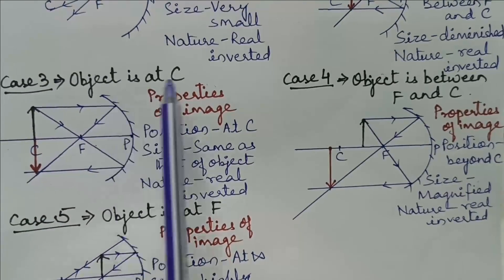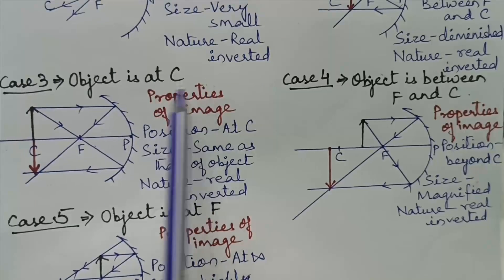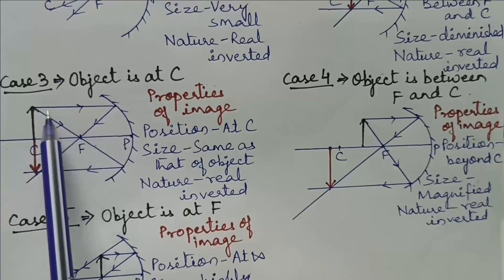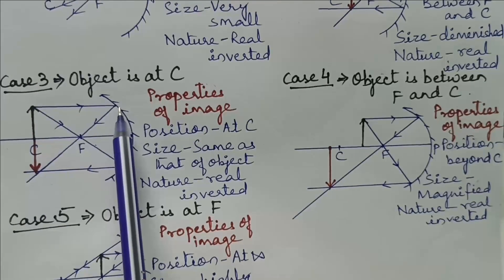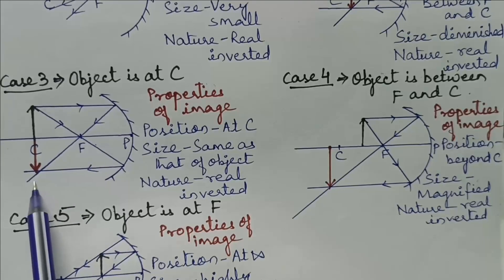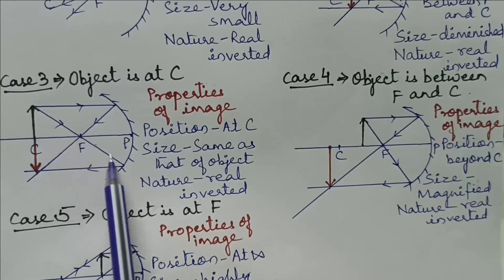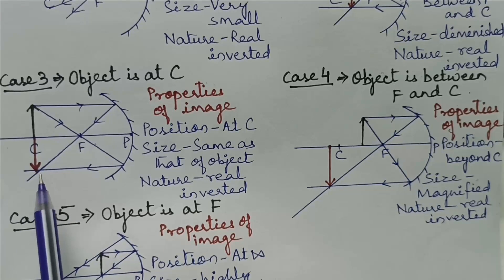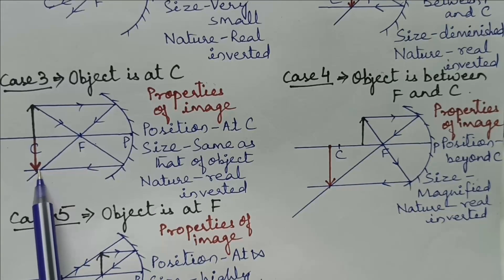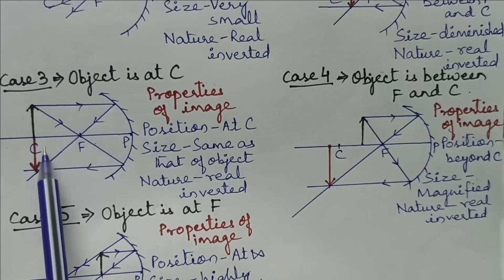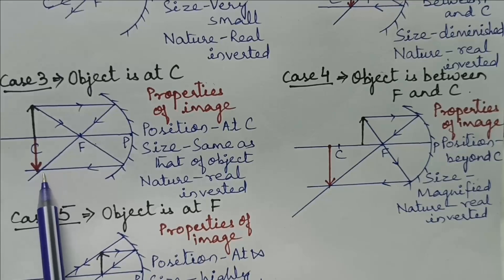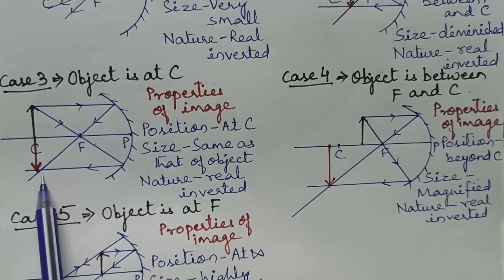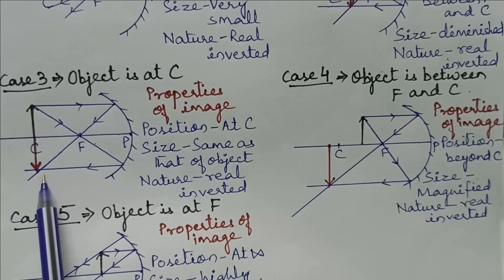Case 3: When the object is placed at center of curvature. The first ray coming parallel to principal axis after reflection passes through focus. The second ray passing through focus moves parallel to principal axis. At the point of intersection of these two rays, image is formed at the center of curvature. The size of image formed is same as that of object, and its nature is real and inverted.